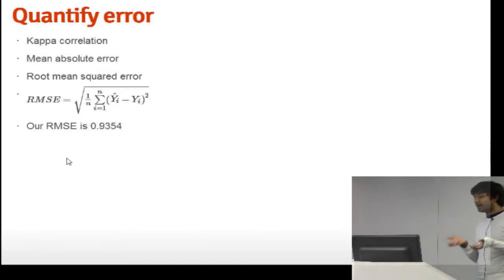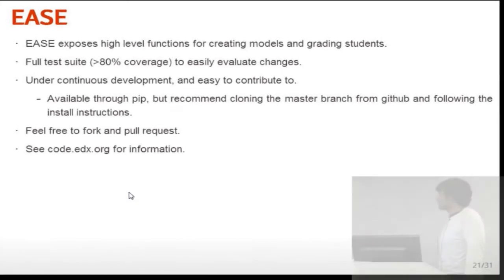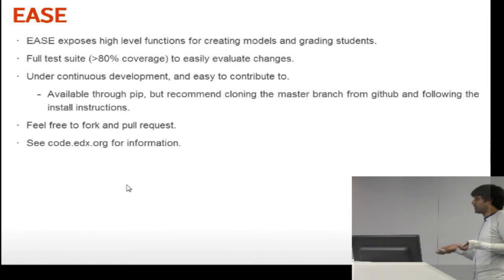So I've talked a lot about the theory behind it. Now we finally get to EASE. So EASE is essentially an open source platform built in Python built with sklearn. Thanks for sklearn that exposes high level functions for creating machine learning models based on text and then for grading students with those models. So all you feed in is the text and the scores. We've also accounted for rubrics. So you might not just want one score to be associated with a piece of text, you might want to have a whole rubric a whole set of criteria. So then it'll create multiple models one for each rubric point. So you can be fed back a lot of targets. So it's pretty well tested, if I do say so myself, over 80% coverage. If you do make a change, it'll be really easy for us to tell if it's a good change or bad change. It's under continuous development. I don't recommend installing it from pip. I do recommend cloning it and installing it locally. Please feel free to pull request, fork it. I'd love to see some contributions. We would all love to see contributions. And you can see code.edx.org for information on that.